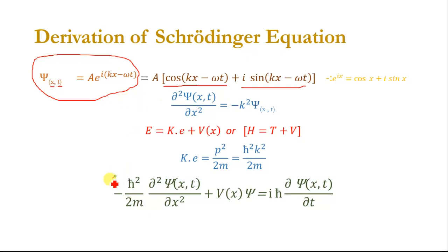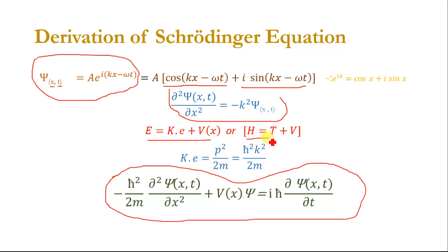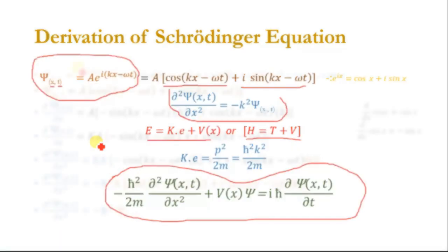We will derive this equation — the Schrödinger wave equation. By taking the partial differential of the wave function two times, we get a new value. Then we will use the total energy term, or the Hamiltonian, which is the sum of kinetic energy plus potential energy, and finally combine these to derive the Schrödinger wave equation. So let's begin with the wave function.